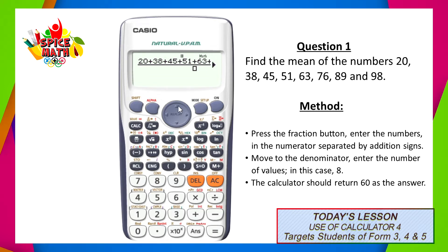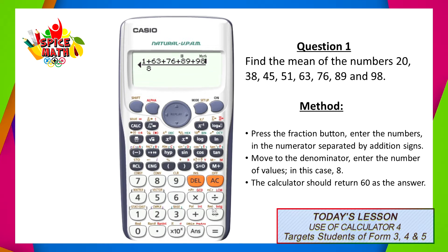Following this, we would move our cursor or that blinking line down to the denominator, and we'd now enter the number of values. In this case, we have eight values in the question, so we would enter the number eight. Once you've checked over and ensured that all of the values have been entered correctly, all that's left to do is hit the equal sign, and this would return a value of 60. So that means that the mean, or the average, of the set of numbers in the question has a value of 60.